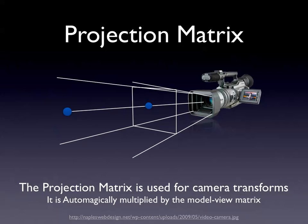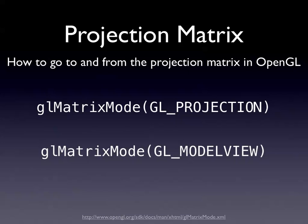The projection matrix is automatically multiplied by the model view matrix. The model view matrix is what we use for planets and objects; the projection matrix is roughly the camera. To switch between these matrix modes, call GL_MatrixMode with GL_PROJECTION or GL_MODELVIEW. Each one also has its own stack so you can push and pop on each individually.